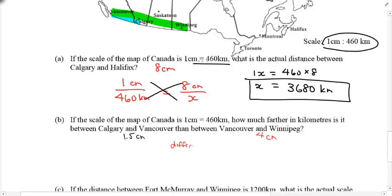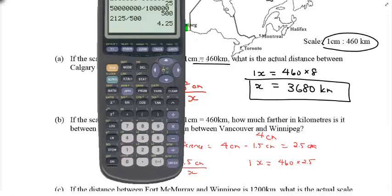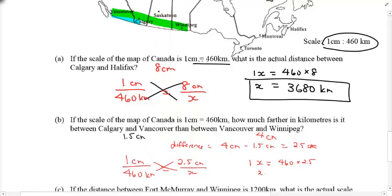So, the difference, because you're trying to find the difference between the two, 4 centimeters minus 1.5 centimeters is actually equal to 2.5 centimeters. So, that distance, how much farther is it? It's equivalent to whatever 2.5 centimeters is in real life. So, now, using my scale factor, I'll say 2.5 on the top, and this is just like the previous question, and we'll just cross multiply and solve. So, 1x equals 460 times 2.5. I don't want to do this in my head this time. 460 times 2.5. That's 1,150. So, the distance difference is 1,150 kilometers.